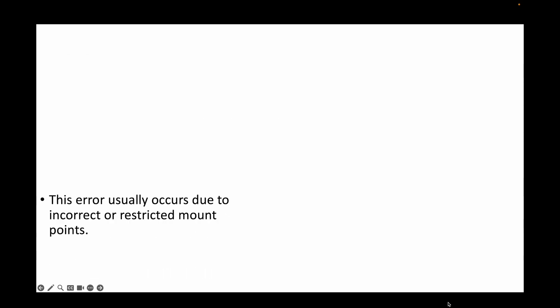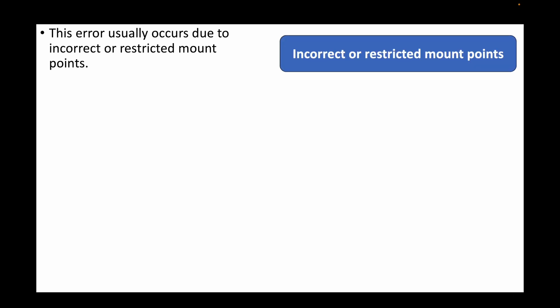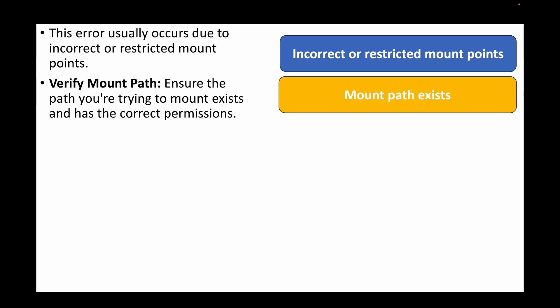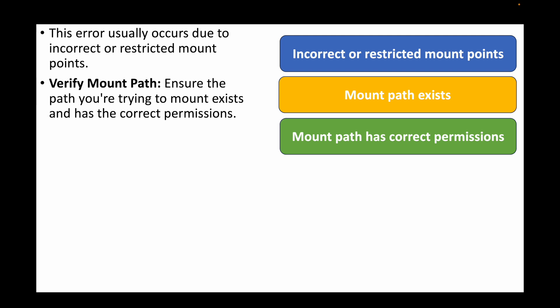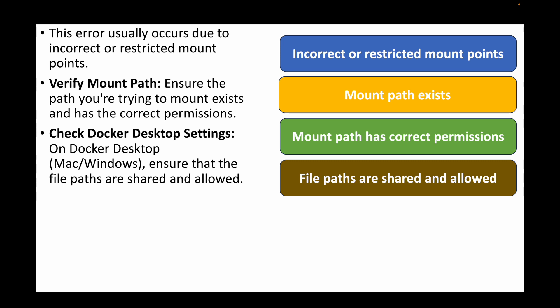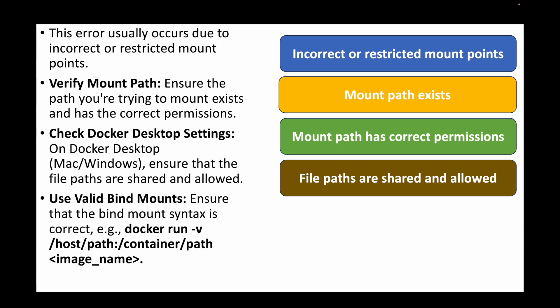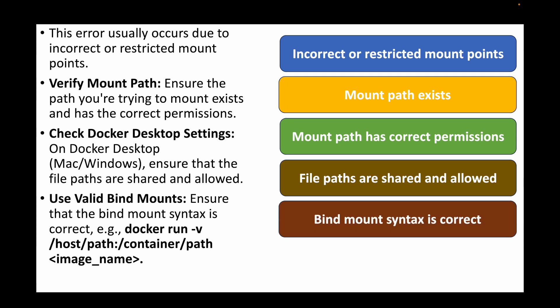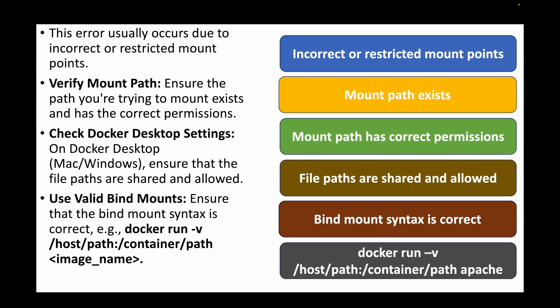The next question is: how do you resolve the 'Docker cannot start service — mounts denied' error? This generally occurs due to an incorrect or restricted mount point. Ensure the mount path exists and has the correct permissions. On Windows or Mac, verify that the file path is shared and allowed in Docker Desktop settings. Also validate the bind mount syntax, for example: `docker run -v /host/path:/container/path <image_name>`, so data created in that path is stored on the host machine.